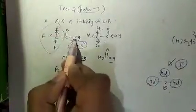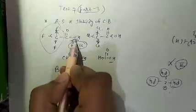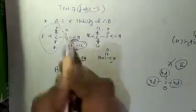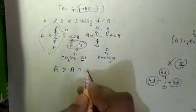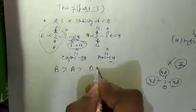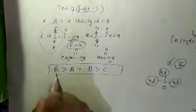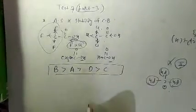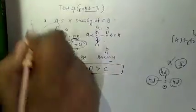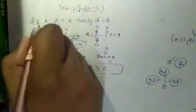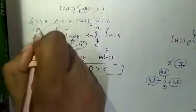CF3 makes the OH bond weakest, so trifluoroacetic acid is most acidic, then trichloroacetic acid, then formic acid (D), and then acetic acid. So question number 31 option A is correct.